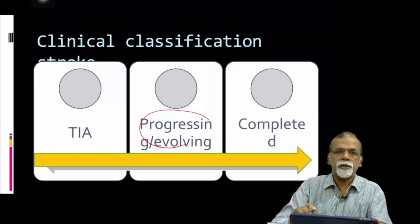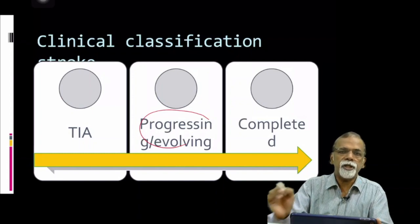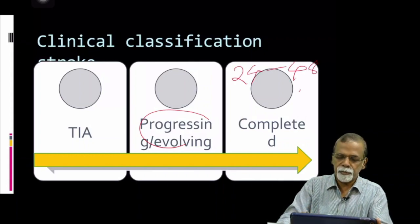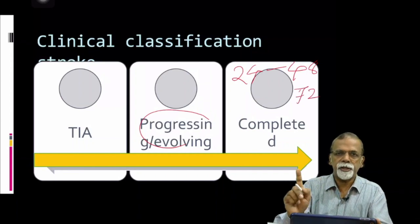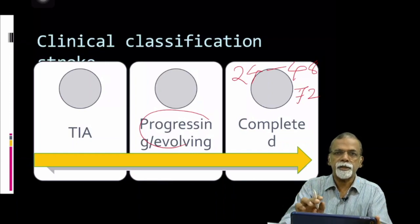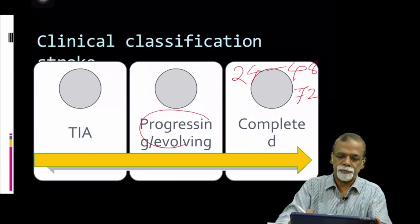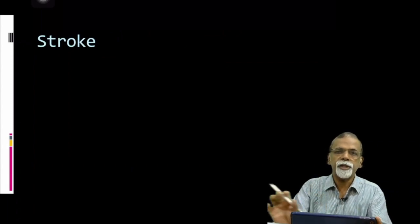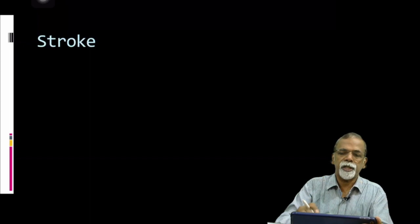Sometimes a stroke is completed. Usually the stroke will be complete within 24 to 48 hours, and maximum 72 hours. The maximum time duration for progression of stroke is 72 hours — that is for posterior circulation stroke. In anterior circulation it is usually less than 48 hours. So if anything is progressing more than 48 to 72 hours, it is unlikely to be stroke — that is an important point to keep in mind.